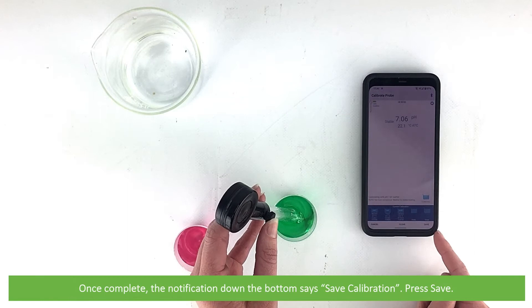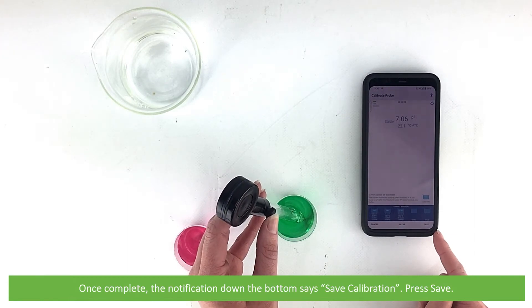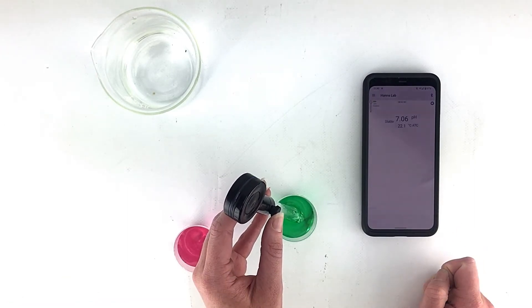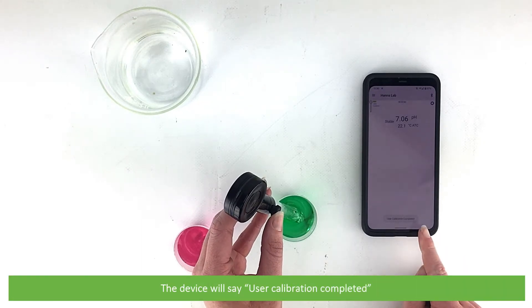Once complete, the notification down the bottom says save calibration, so press save. The device will say user calibration completed.